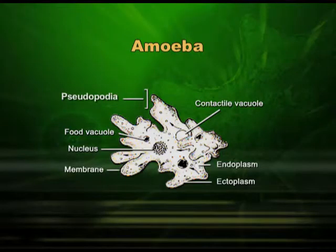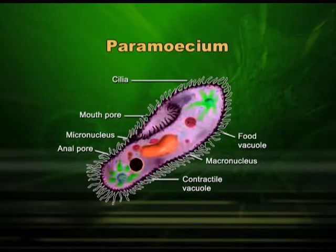Starting with amoeba, a unicellular organism — it moves with the help of pseudopodia, which it produces in the direction in which it wants to move. That means the locomotory organ in amoeba is pseudopodia. If we observe paramecium, it is lined by cilia, and these cilia are the mode of locomotion in this organism.